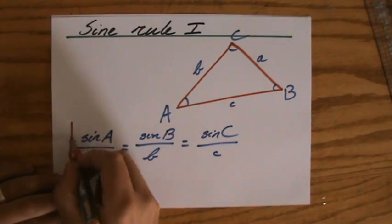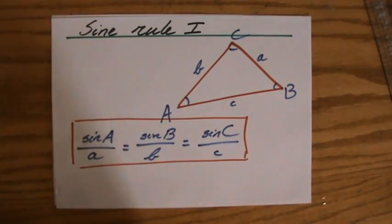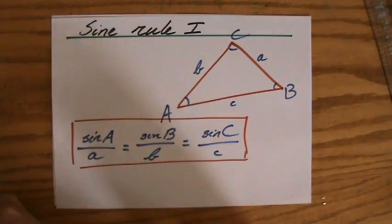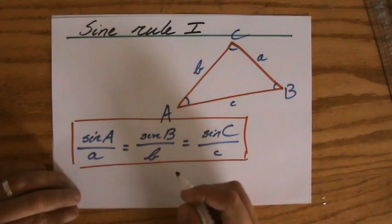So, I can put a nice big box around that, because we're going to use that a lot in non-right-angled triangles, to calculate the lengths and angles. I can also turn it around and say...